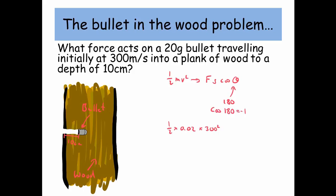So what's the kinetic energy of the bullet to begin with? It's a half times its mass, which is 0.02 times by 300 squared, which is 900 joules.